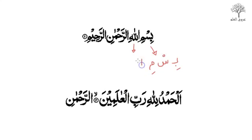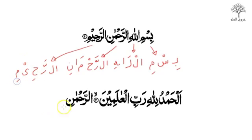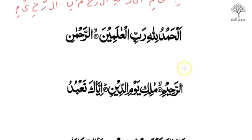Have a go yourselves — I'm breaking it down here word by word, so try and work out the pronunciation of each word in the Arabic. So Bismi, then Allahi, then Ar-Rahmani — remember the Shadda represents two letters — then Ar-Rahim. So: Bismillah Ar-Rahman Ar-Rahim. Have a go with that.